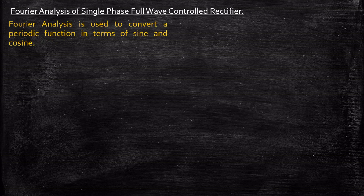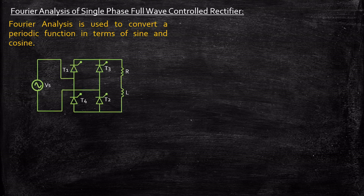Fourier analysis is primarily used to convert a periodic function in terms of sine and cosine. This is the fundamental purpose of using Fourier analysis — any periodic function can be converted to sine and cosine. So why do we need Fourier analysis in our circuit?